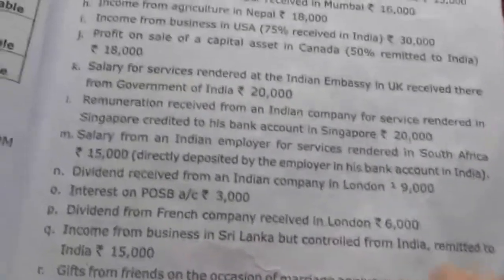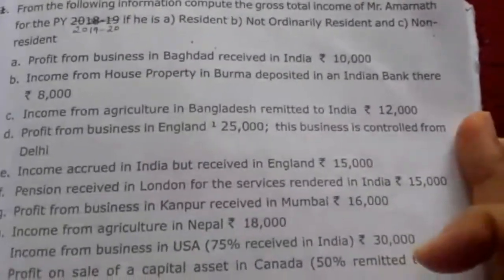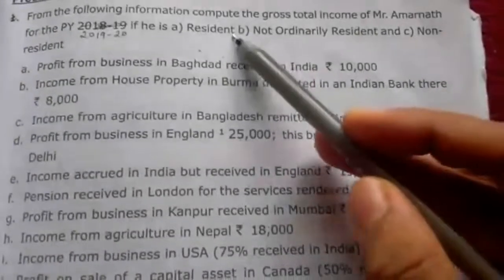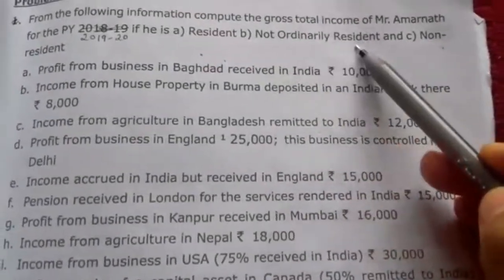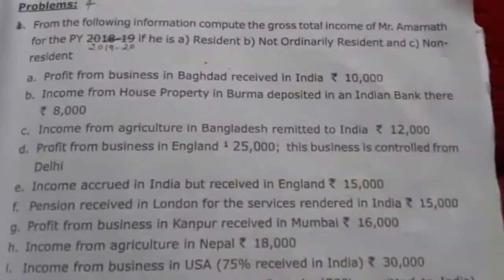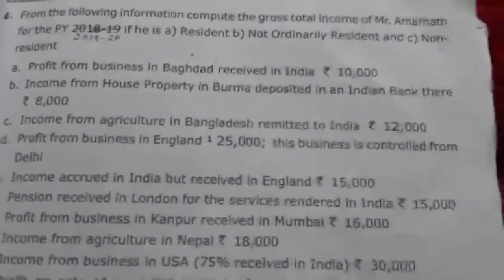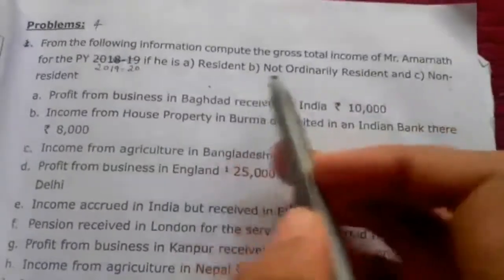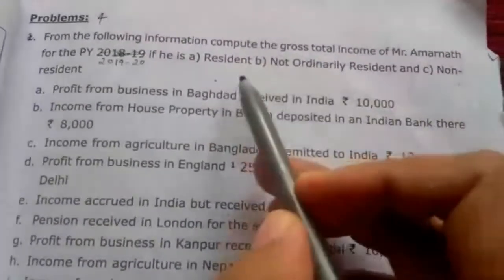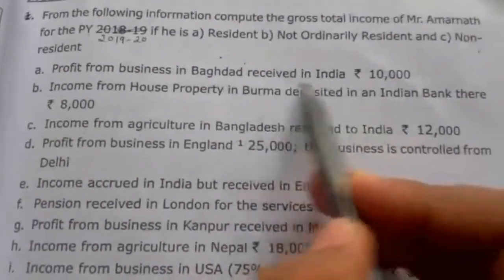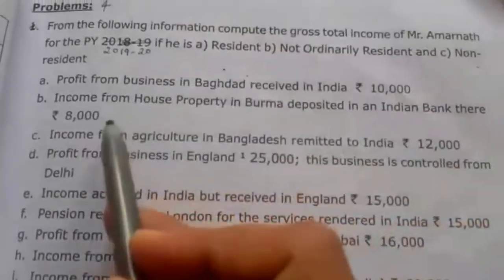From this information we determine which income is taxable for resident (ordinarily resident), not ordinarily resident, and non-resident. First, profit from business in Baghdad received in India: since the income is received in India, Rs. 10,000 is taxable in all three cases.